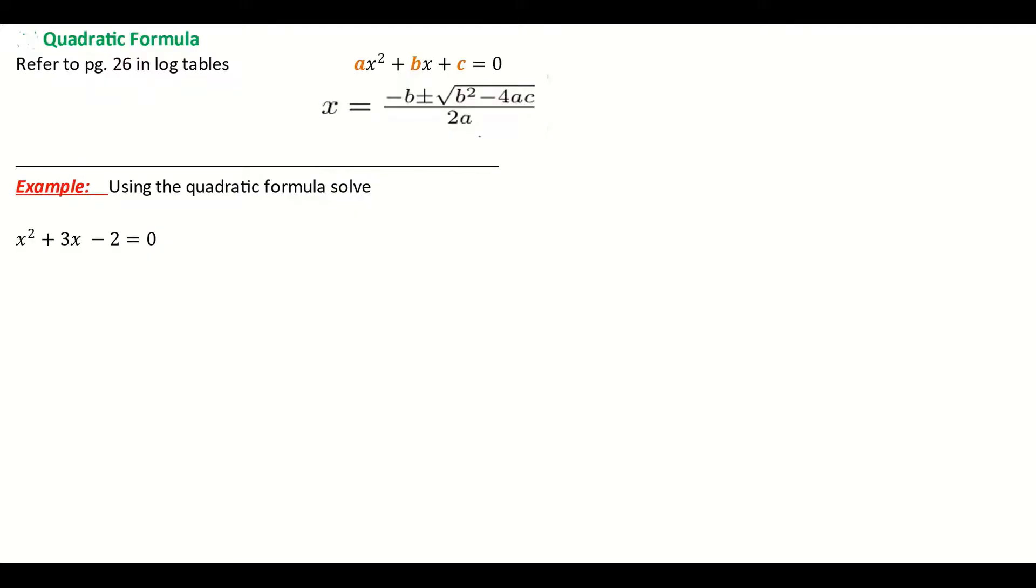In this video we are going to be looking at our quadratic equation formula from our log tables on page 26, which is stated as x equals minus b plus or minus the square root of b squared minus 4ac all divided by 2a.